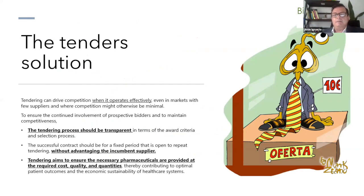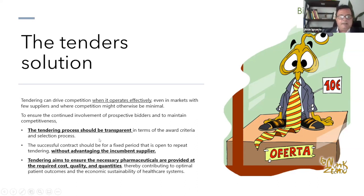In Europe, tenders are really the solution that most governments have put in place to ensure the system works. The aim of tendering is to ensure the necessary products at the required cost, with the right quality and quantities — and this should be done by making the process transparent and giving the same opportunities to all players. Otherwise the system will not be sustainable in the future.